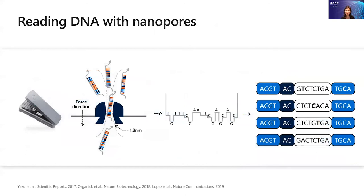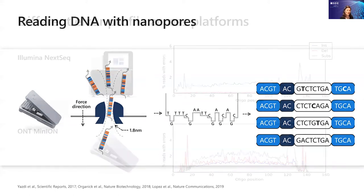Another way to do that is using nanopore devices. Here the reading is electrical and it's really dragging the DNA through a nanoscale pore and measuring electrical disturbances that it causes as it goes through. This is what generates the reads.